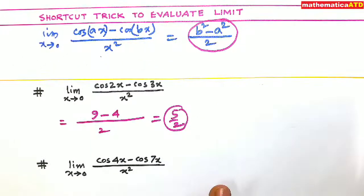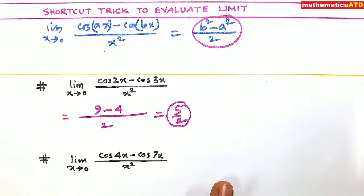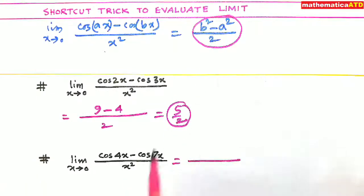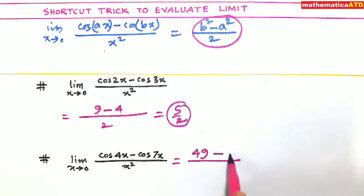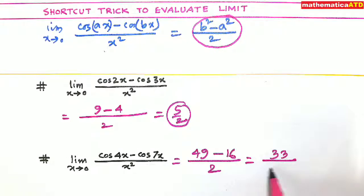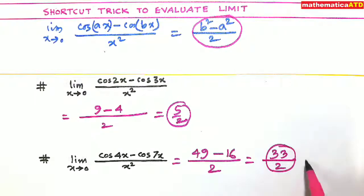So in this way, you can find the result of the second one also. What will be the result? Limit x tends to 0, cos 4x minus cos 7x upon x square. Here a is equal to 4, b is equal to 7. So b square minus a square means 7 square means 49 minus a square. A square means 4 square, 16 upon 2. So what is the result? The result is 33 upon 2. Only you have taken 5 seconds.